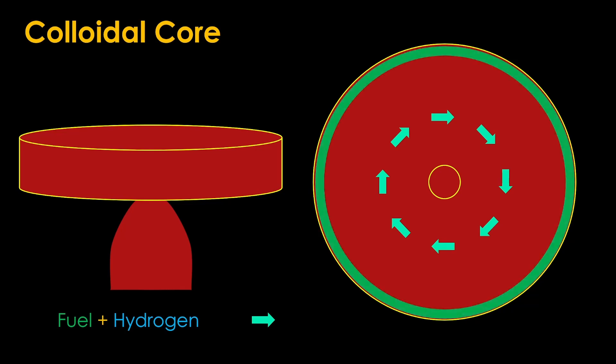The vortex pushes the uranium particles towards the outside of the chamber where they fission and the hydrogen is heated and pushed towards the middle where it exits through the nozzle producing thrust.